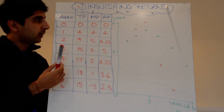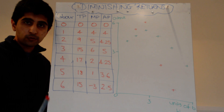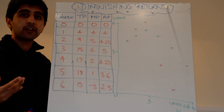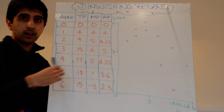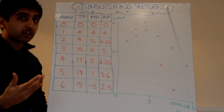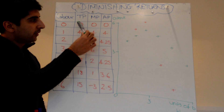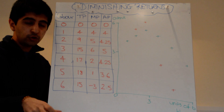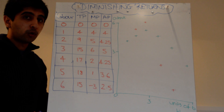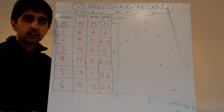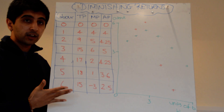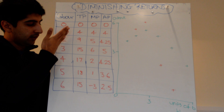We have labour on the left, starting from zero units up to six workers. We could then look at how many paper aeroplanes were produced as we hired more workers. Going from no workers to one worker, that worker made four units in one minute. With two workers hired, total product rose to nine. With three workers it rose to fifteen. Four workers rose to seventeen, five to eighteen, and six to fifteen.